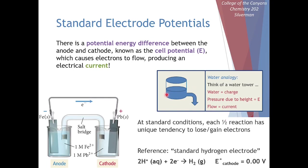Why does water flow from high to low? There's a potential energy difference. Why do electrons flow from the anode to the cathode? There's an electrical potential difference between our anode and our cathode. Our anode is at a higher potential energy than our cathode, and just like water spontaneously flows downhill due to gravity, electrons will spontaneously flow from high electrical potentials to lower electrical potentials.